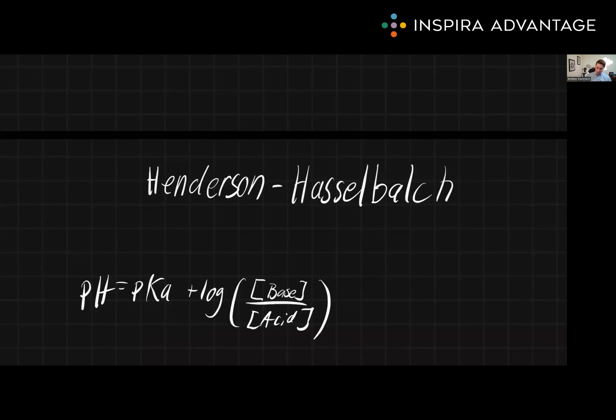The Henderson-Hasselbalch equation is written as pH equals pKa plus the log of the concentration of base over acid, where pH is the pH of the solution, and pKa is the acid dissociation constant of the weak acid in the buffer. And the concentration of base is how much base you have, and the concentration of acid is how much acid you have, usually in molarity, but moles will work as well. Either one can be used interchangeably as long as you're using the same on top and same on bottom.